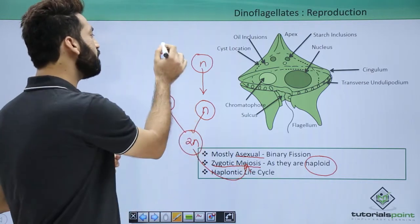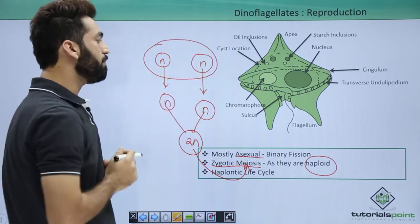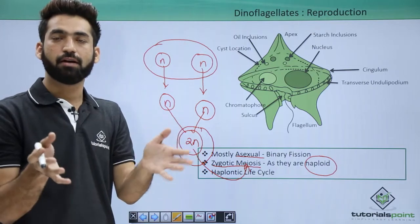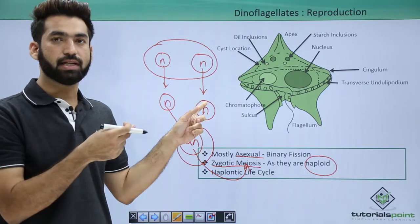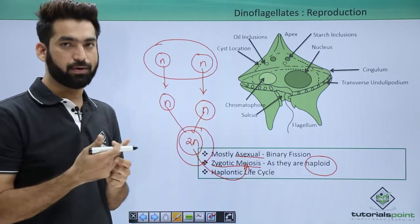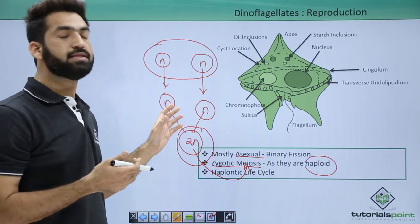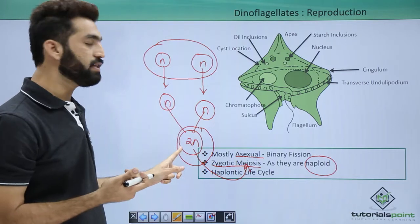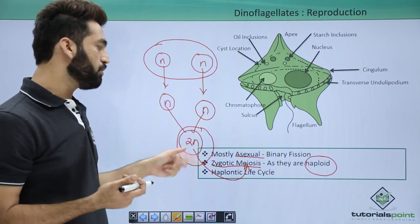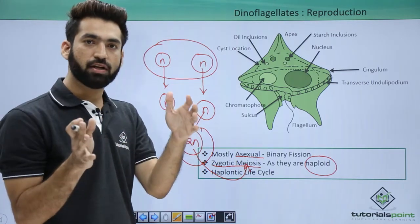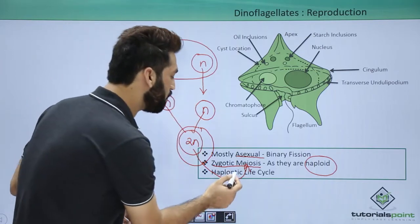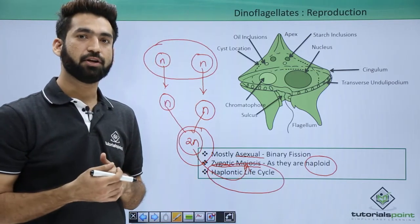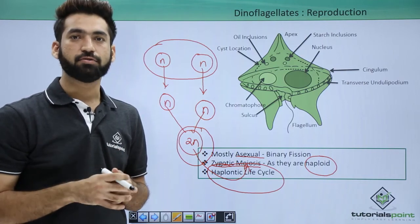Most of the life cycle of a dinoflagellate is haploid; diploidy occurs only when the zygote is formed. Since the life cycle is predominantly haploid, this is called a haplontic life cycle. In the next section, some important facts related to dinoflagellates will be discussed.